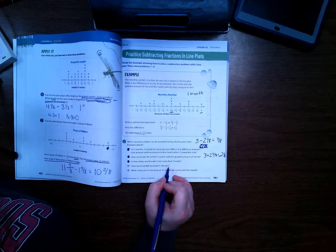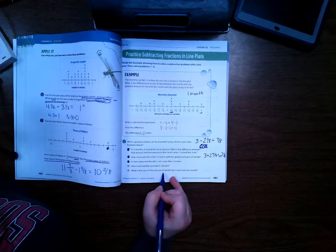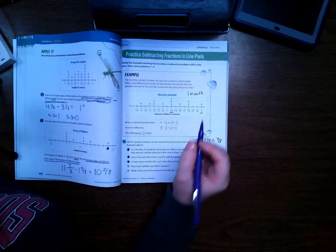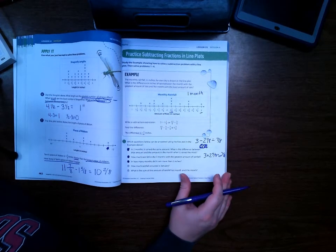How much rainfall occurred in January? Well, it doesn't tell us when January is. What is the sum of the amount of rainfall last month and this month? Well, it doesn't tell us for last month and this month. It just has x's for the month. So we can't answer that one.